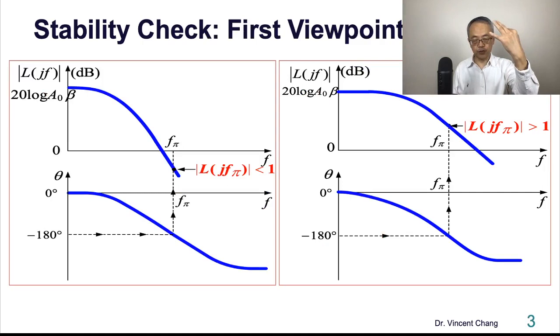At this frequency, according to Euler formula, the exponential term becomes negative one. Then the loop gain becomes negative, turning the circuit into positive feedback. And three scenarios: oscillation, unstable, and stable.